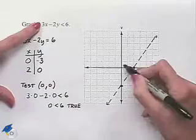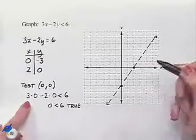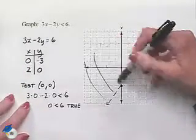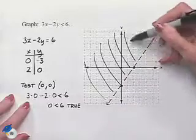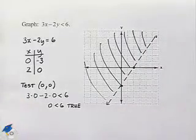And so that means we want to include the origin in part of our solution set. So we're going to shade the half plane that includes the origin, and there's our graph.